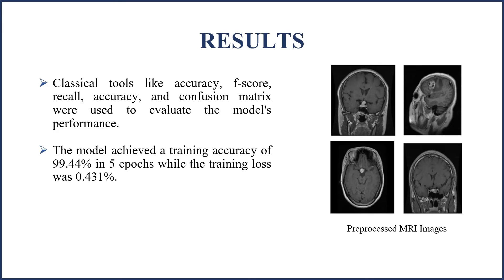For the results, since this was a classification task of whether a brain tumor is malignant or not based on MRI images, classical metrics like accuracy, F-score, recall, and confusion matrix were used to evaluate the model's performance. This model achieved a training accuracy of 99.44% in just 5 epochs, while the training loss was 0.431%. There was no further change in loss after the 5th epoch, so the cycle was ended at 5.